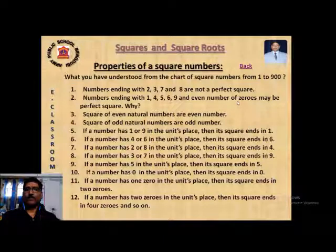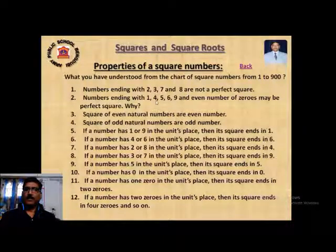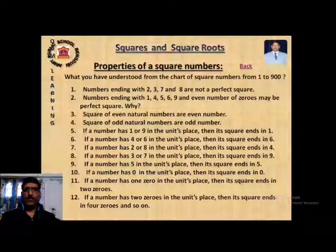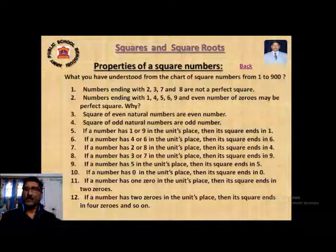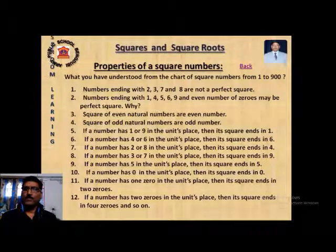Numbers ending with 1, 4, 5, 6, 9, or an even number of zeros may be perfect squares. I say 'may be' because, for example, 4 and 64 end with 4 and are perfect squares, but 14, 24, 34, 44, 54 also end with 4 and are not perfect squares. So if a number ends with 1, 4, 5, 6, or 9, there is a chance it could be a perfect square number.